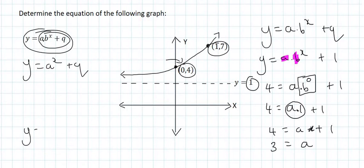So I'm going to move it over to here. I'm going to fill in the A value as 3. Now we only have one letter to find. And so now we can substitute the other point, which is 1 and 7.